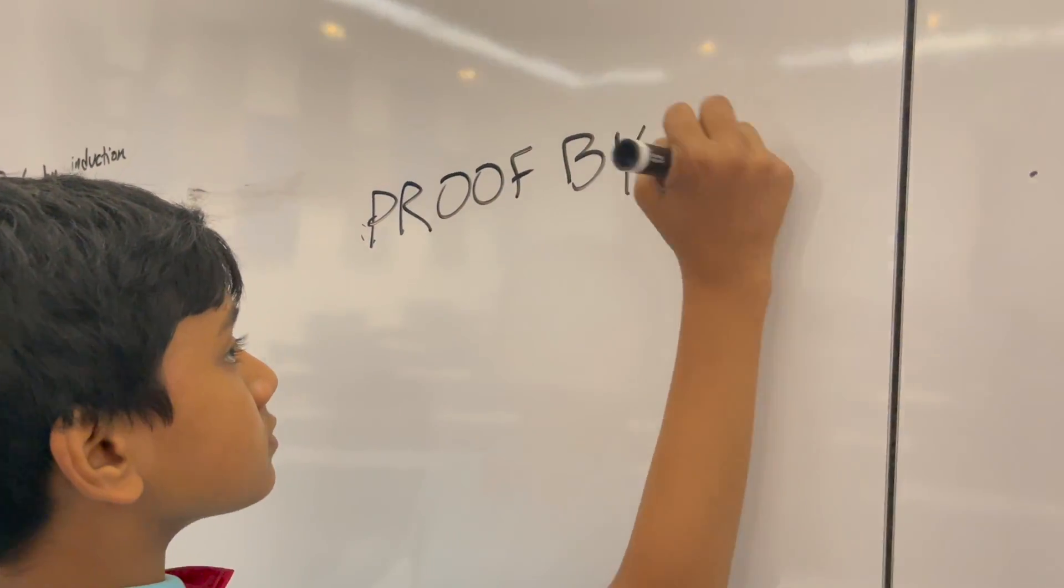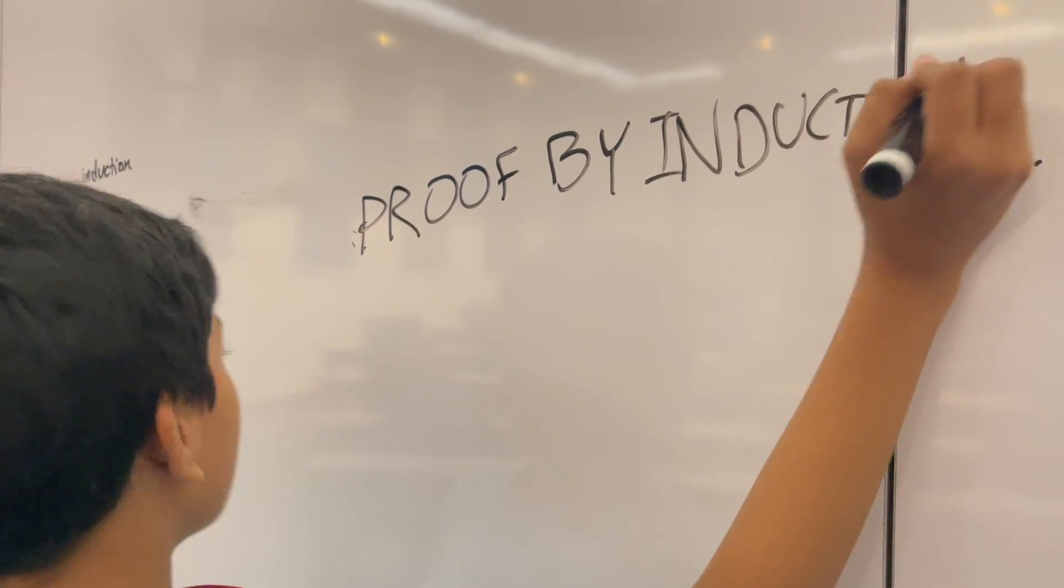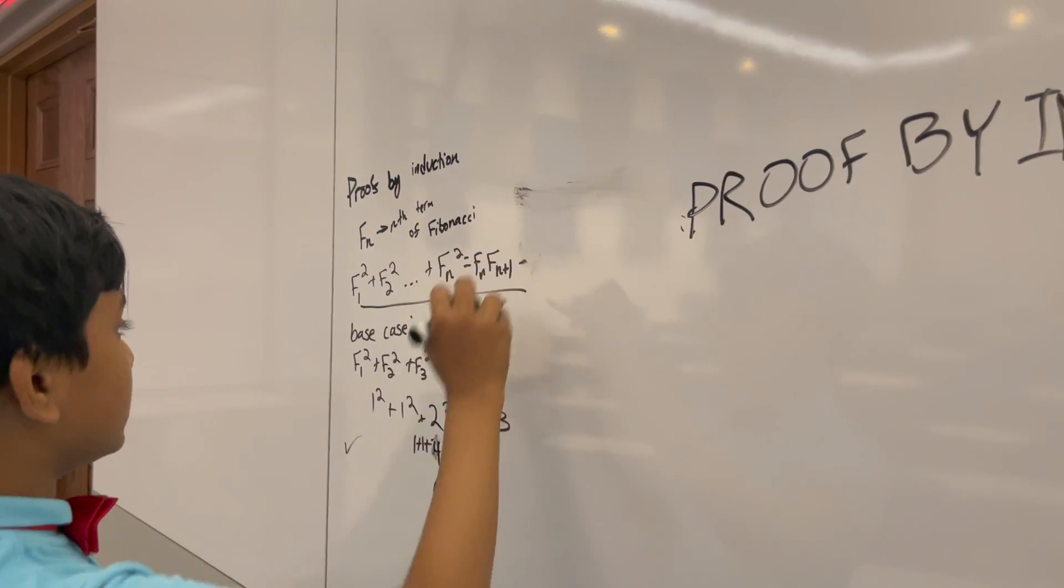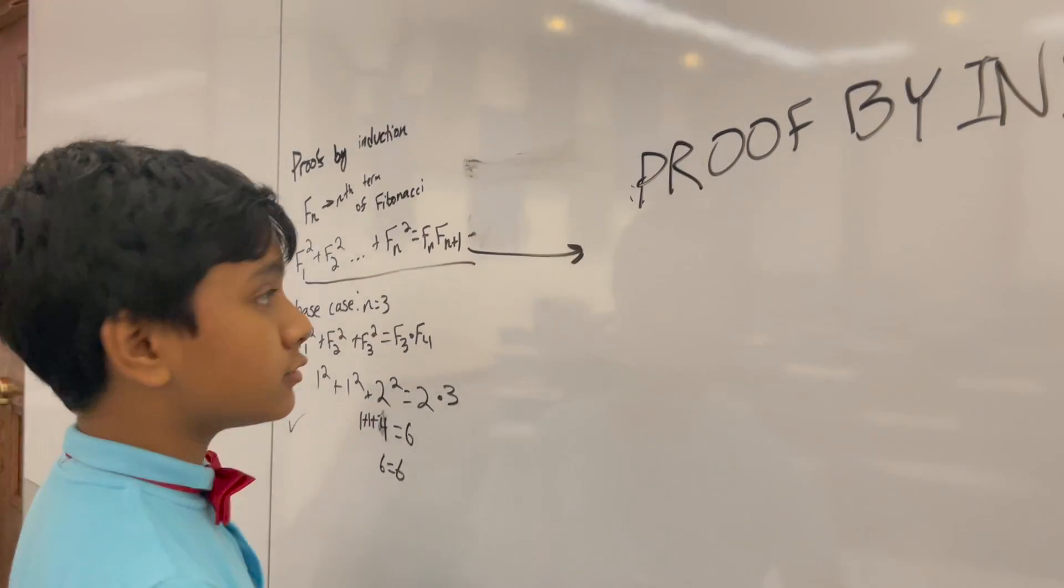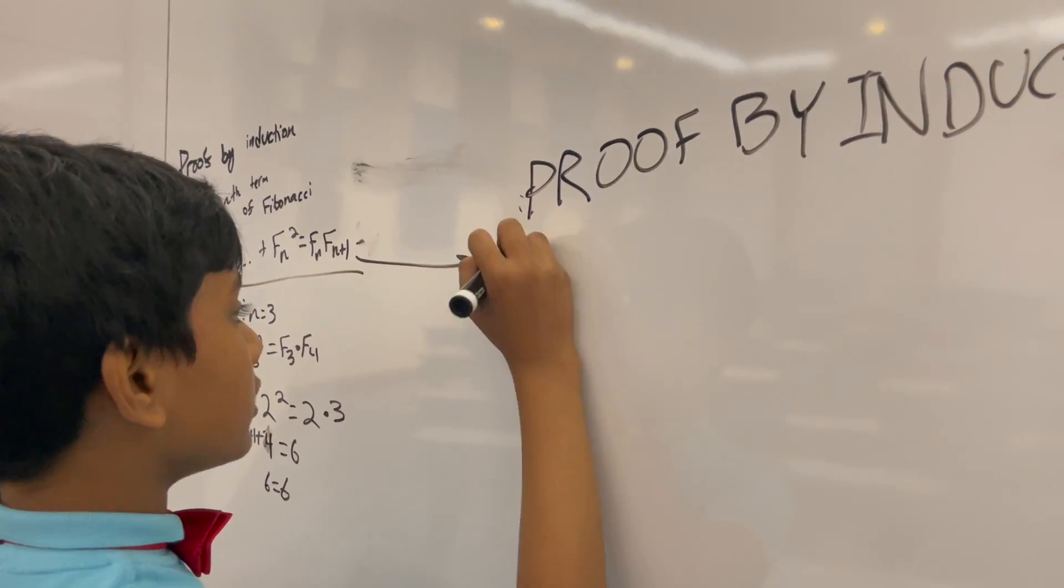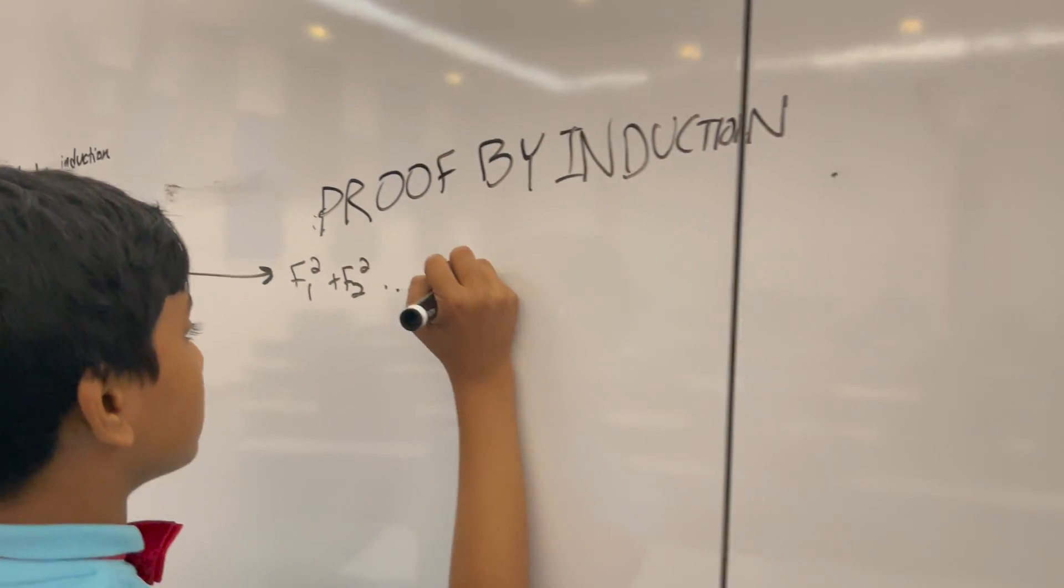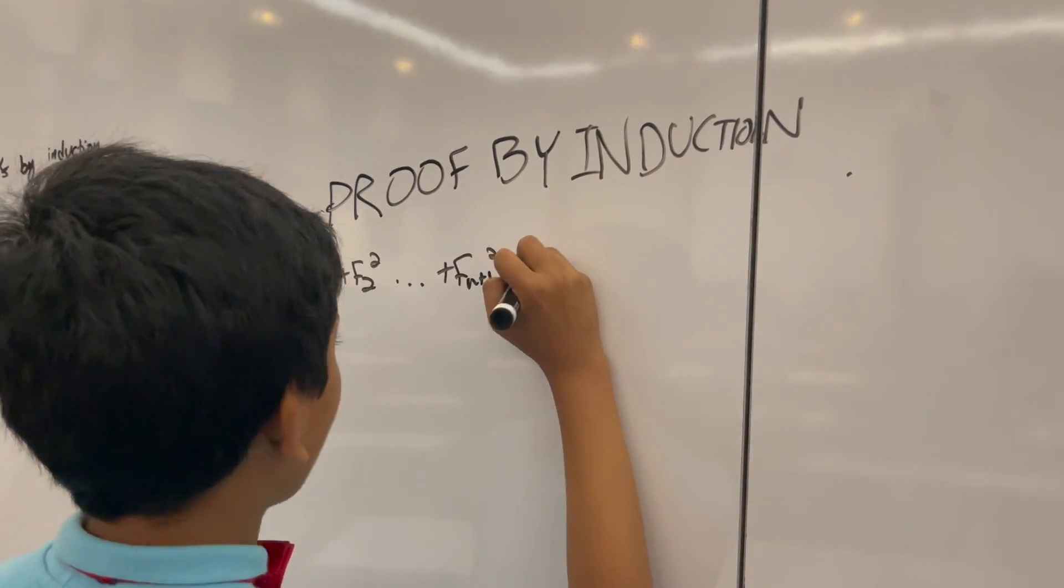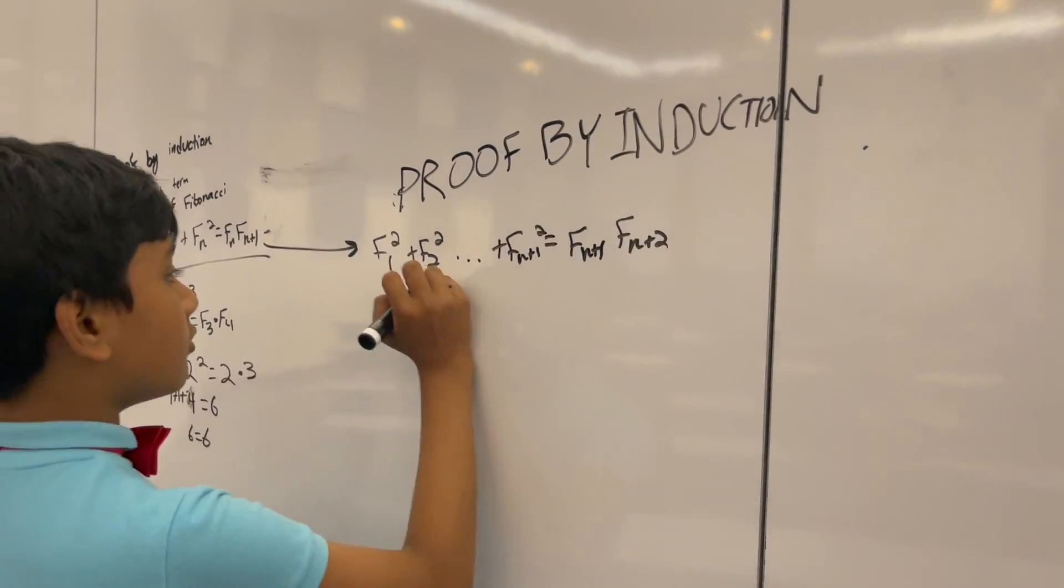Now, what do we know about this? Well, let's assume this is true. Then let's prove that it's true for n plus 1. If we plug in F1 squared plus F2 squared, etc., to Fn plus 1 squared equals Fn plus 1 times Fn plus 2, what does that give me?